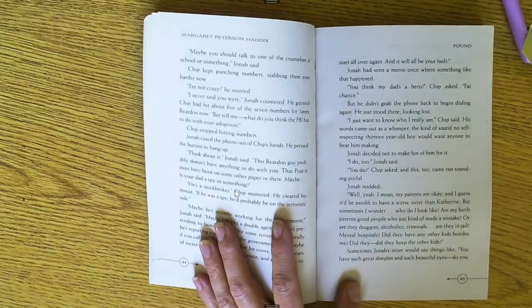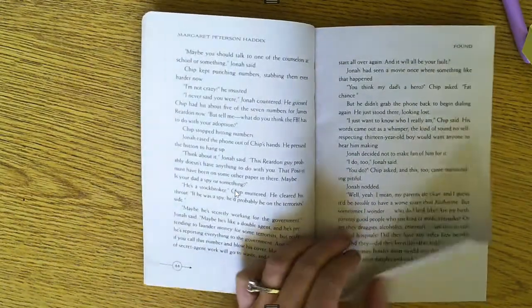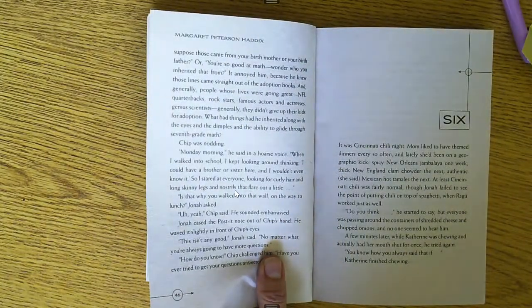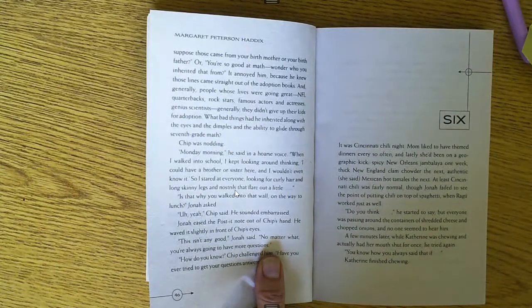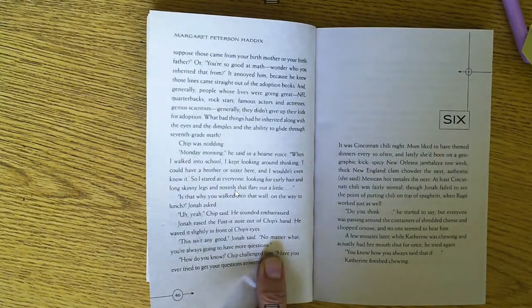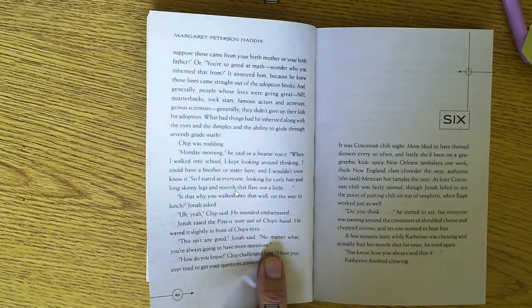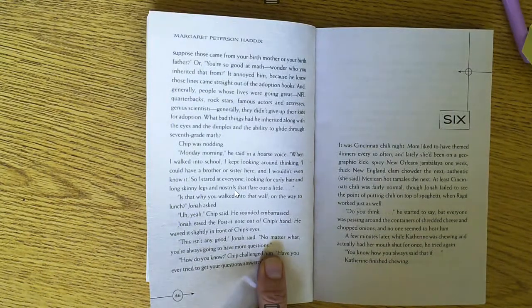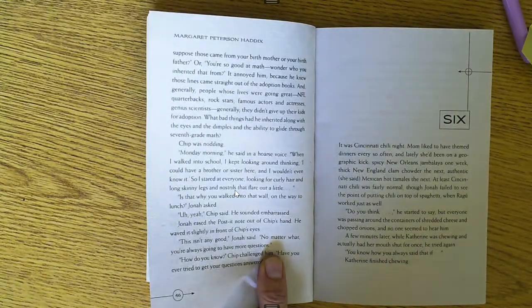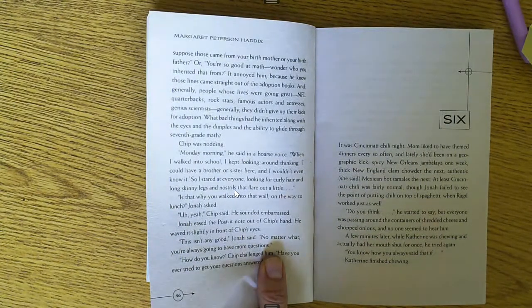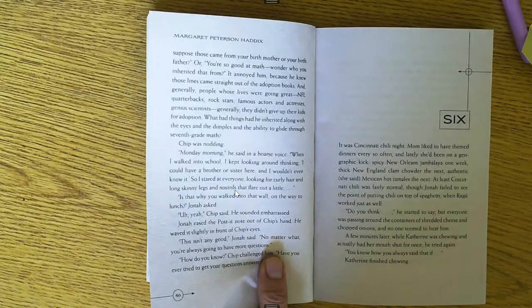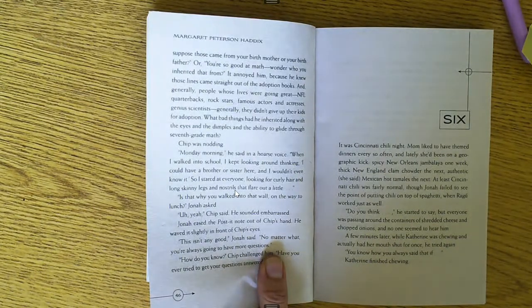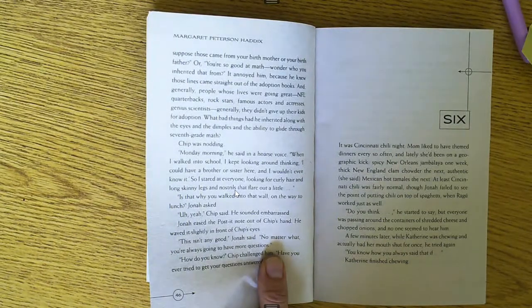Sometimes Jonah's mom would say things like, you have such great dimples and such beautiful eyes. Do you suppose those came from your birth mother or your birth father? Or she'd say, you're so good at math. Wonder who you inherited that from? It annoyed him because he knew those lines came straight out of adoption books. And generally, people whose lives were going great, like NFL quarterbacks, rock stars, famous actors and actresses, genius scientists, generally they didn't give up their kids for adoption. What bad things had he inherited along with the eyes and the dimples and the ability to glide through seventh grade math?